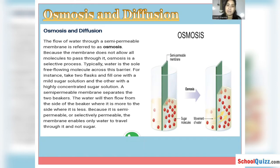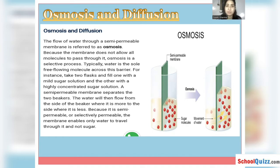Osmosis is a selective process — only selective particles will be able to pass through the membrane, not each and every particle along with the water. Typically, water is the sole freely-flowing molecule across this barrier. As you can see in this diagram, before osmosis there were fewer water molecules on one side, and on the opposite side the concentration of solute particles was very high. After the process of osmosis, water molecules have moved from the left side to the right side, and the water level has increased from low to high.